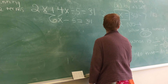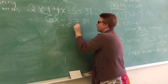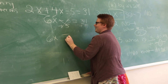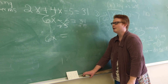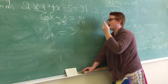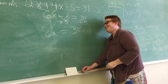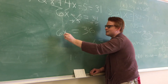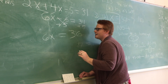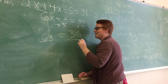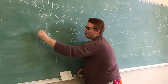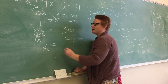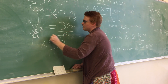Is x by itself? No, I have a minus 5. I'm going to undo that — add 5 on both sides. I bring down 6x, the minus 5 goes away, and 31 plus 5 equals 36. So now I'm back to 6x equals 36. Is x by itself? No, the evil 6 is bothering it — it's being multiplied. I undo that with division: divide by 6 on both sides. 6x over 6 cancels, and 36 divided by 6 is 6. Is x by itself? Yes. X equals 6. We are done.